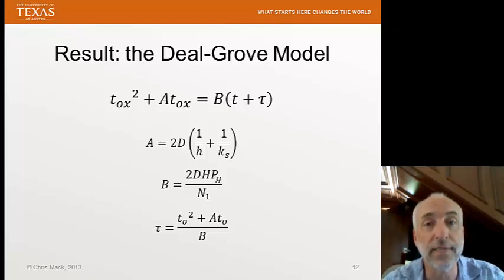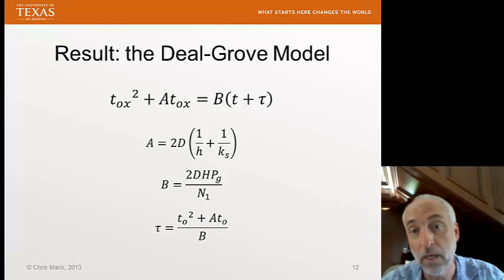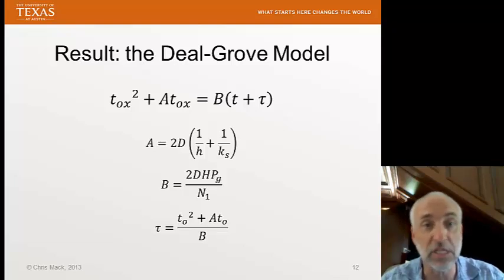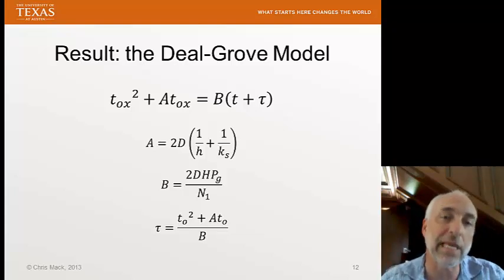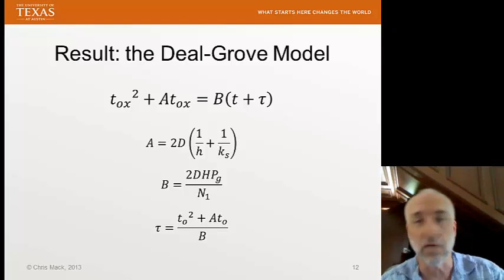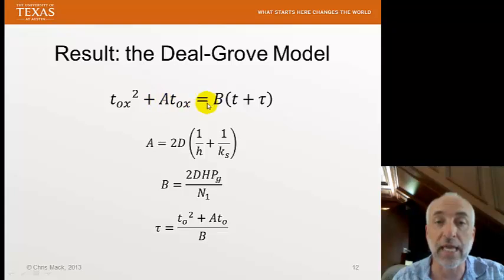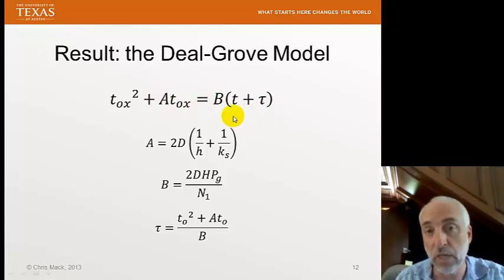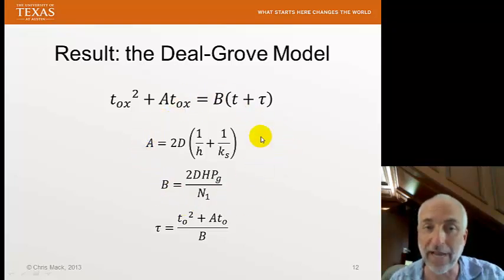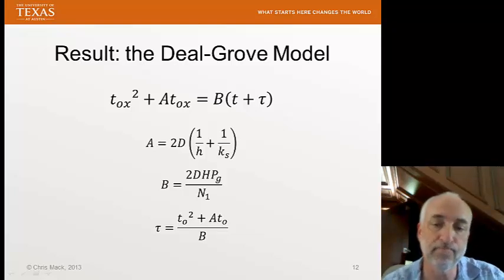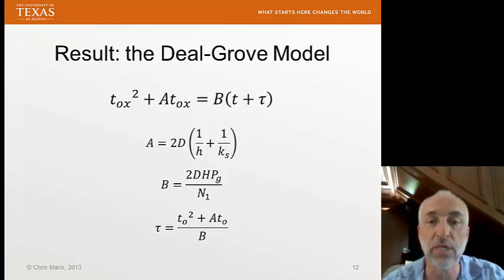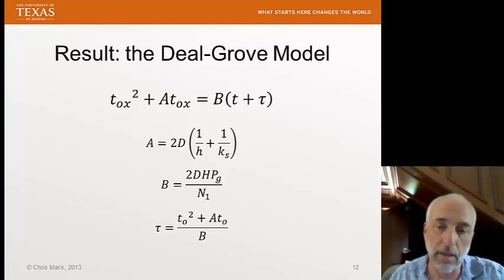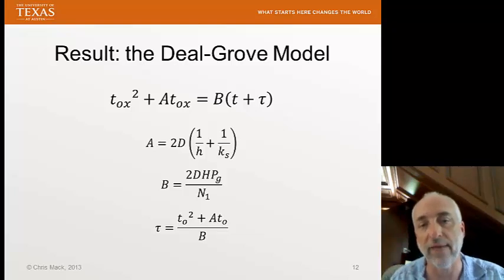This is the Deal-Grove model. It is very useful for performing calculations: given furnace time t you can calculate the resulting oxide thickness, or more commonly, given a desired oxide thickness you can determine how long to run the furnace. The model has three parameters — A, B, and tau — that must be determined through experimental measurements. Next time we'll look at how to use the Deal-Grove model for calculations and examine tables and graphs of the A and B parameters.